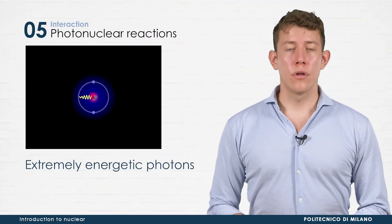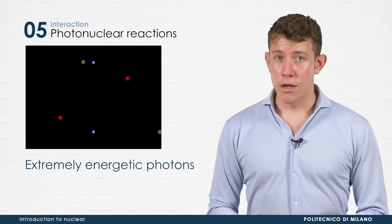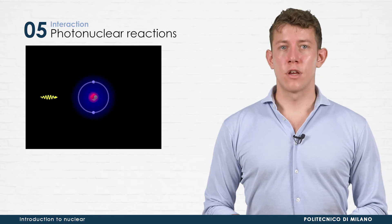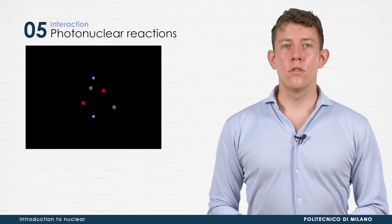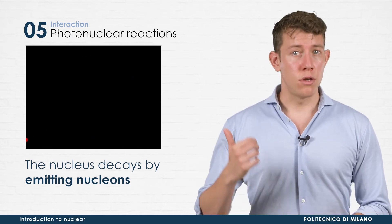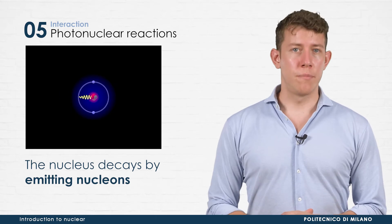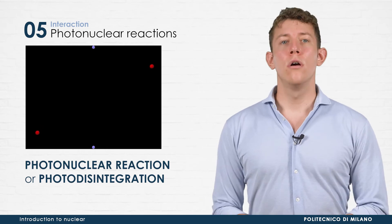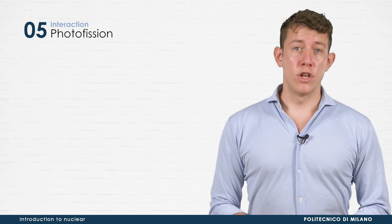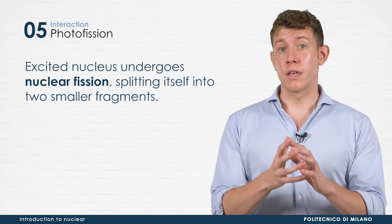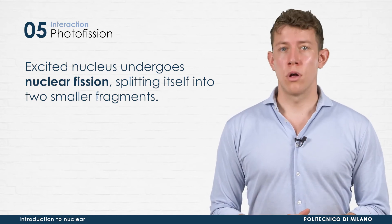Extremely energetic photons can directly interact with atomic nuclei, causing nuclear reactions. After the absorption of such a photon, a nucleus goes into an excited state and immediately decays by emitting nucleons, such as neutrons, protons, or even alpha particles. This process is called photonuclear reaction or photodisintegration. A similar phenomenon is photofission. In this scenario, the excited nucleus undergoes nuclear fission, splitting itself into two smaller fragments.